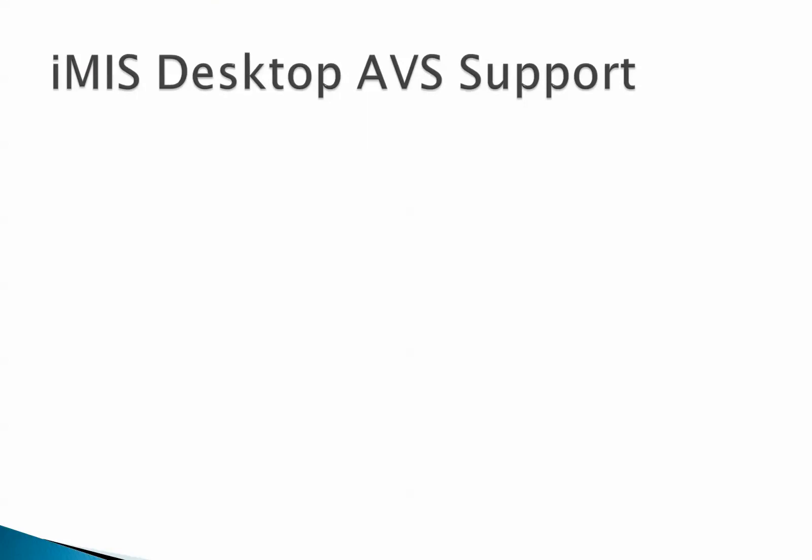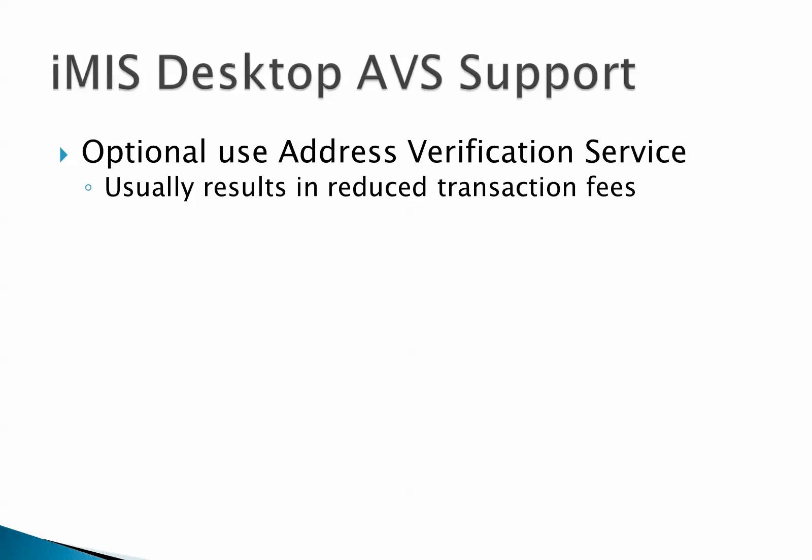ATS's Authorize.net Custom Payment Gateway also supports Address Verification, or AVS. AVS is the process of sending to the gateway the individual's address along with standard credit card data to verify this address against the billing address on record for the credit card being charged. This adds an extra layer of security, and including this information on each credit card transaction usually results in a reduction of the transaction fees charged by Authorize.net. Of course, if you decide not to enable AVS on your payment gateway, this feature can be turned off.